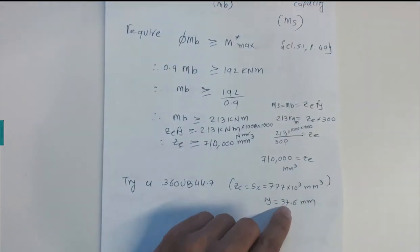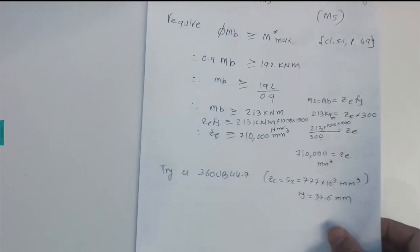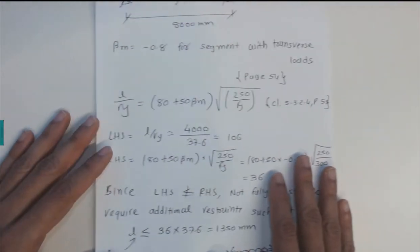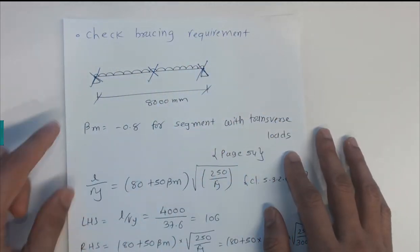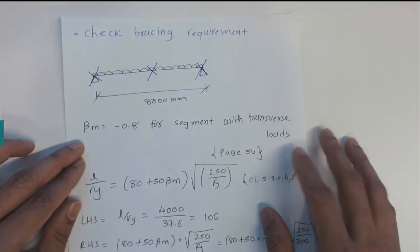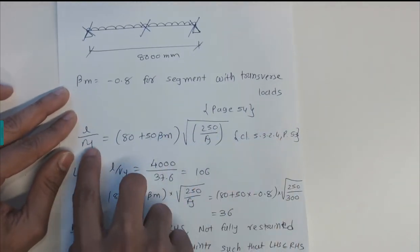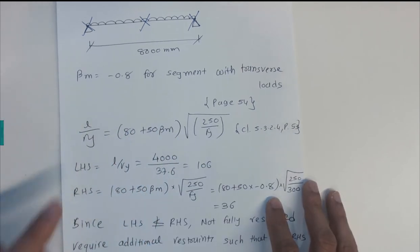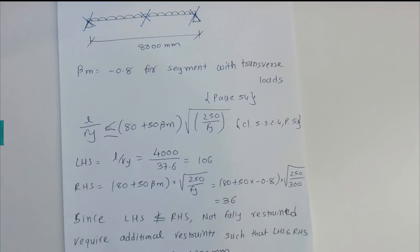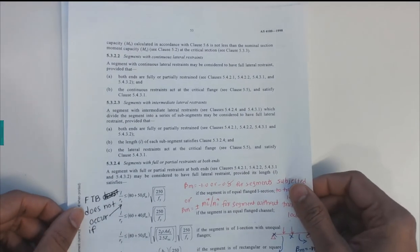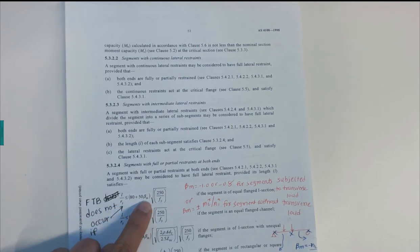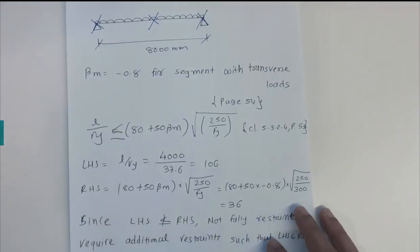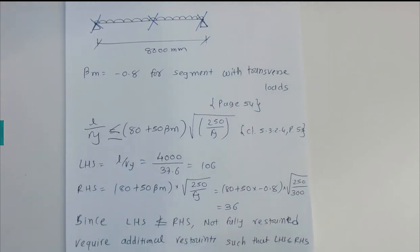After selecting the section, we check whether the bracing given is enough to consider the beam fully restrained. With three bracings provided, we use the equation from Clause 5.3.2.4, page 53: L/ry ≤ (80 + 50βm) × √(250/Fy). The bracing segment length L is 4000 mm.